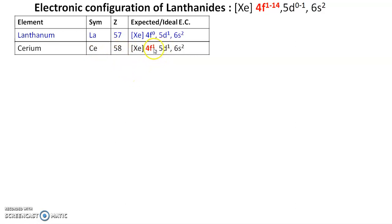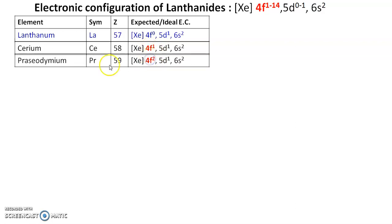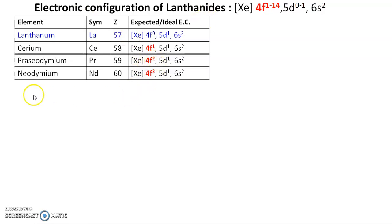The next element is cerium, atomic number 58. The differentiating electron enters the 4f orbital, giving the configuration [Xe] 4f¹ 5d¹ 6s². So up to 5d¹ there are 57 electrons, and the 58th electron enters 4f. For praseodymium, the configuration becomes 4f², and for neodymium the next electron again enters the 4f orbital giving 4f³.